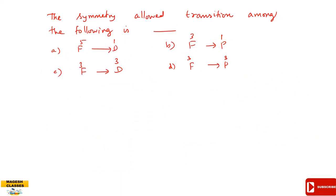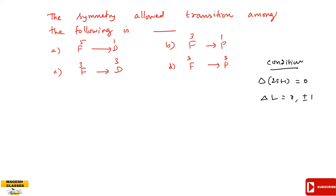Next: which transition is symmetry allowed? The condition for allowed transition: delta(2S+1) equals 0, meaning spin multiplicity must not change. Also, delta L equals 0 or plus or minus 1 are allowed conditions.